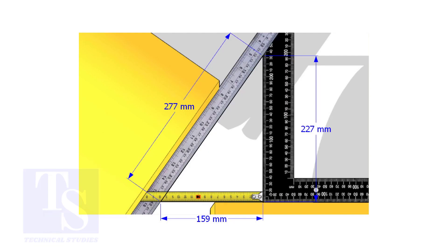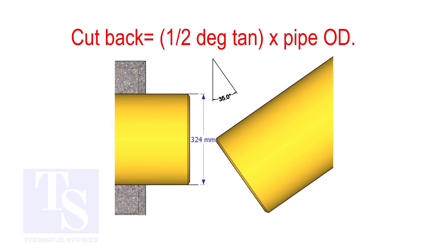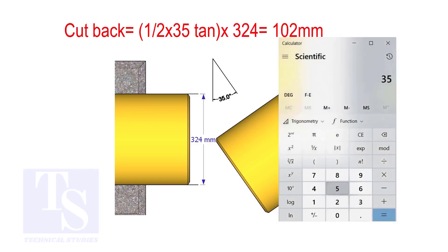How to calculate the cutback of a single cut miter. When it is a single cut, the cutback is half degree tan multiplied by the OD of the pipe. The answer is 102 millimeters.